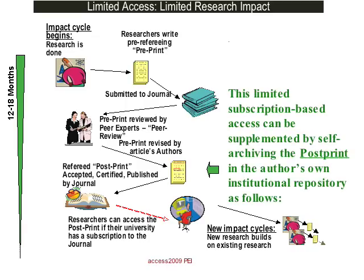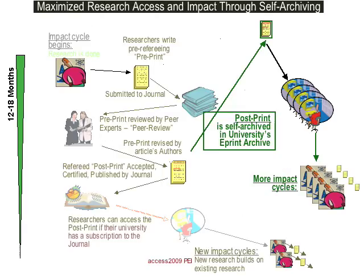This research impact cycle depends, however, on how many users can access the research output, and that in turn depends on whether their institutions can afford to subscribe to it. This limited subscription-based access can be supplemented by self-archiving the postprint — that is, the final referee draft — in the author's own institutional repository. Providing green open access just means doing the keystrokes to deposit the author's final refereed postprint, so that not just subscribers but anyone on the web can use and build upon it, thereby maximizing its research impact and the progress and impact of research itself.